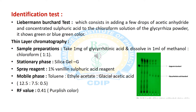Now we will discuss the identification test for glycyrrhizinic acid. We take a chloroform extract of glycyrrhiza powder and treat it with a few drops of acetic anhydride and concentrated sulfuric acid. It shows a green or blue-green color.